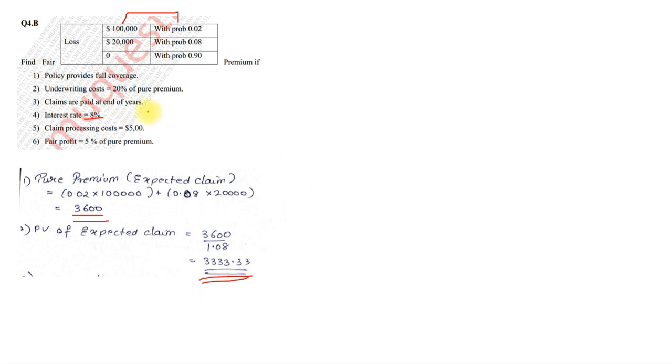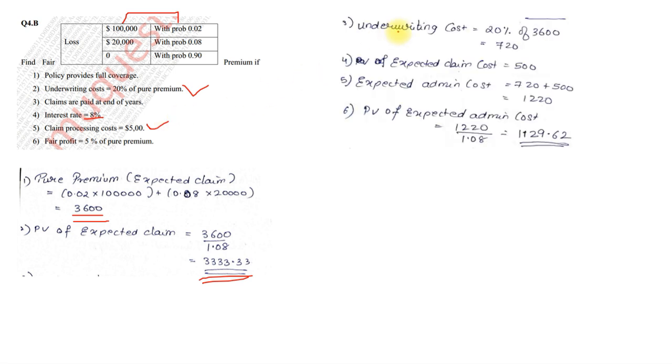Next, we need to find, now they have given you underwriting cost is given which is 20% of premium. And processing cost is given as 500. So, underwriting cost is 20% of premium of expected claim. So, it came to 720. Expected claim was 500. So, expected administrative cost is the addition of both which came to 1220. Once we get that, we need to find the PV of expected admin cost. So, 1220 divided by 1.08. So, we got the value as 1129.62. That is our second value that we require.